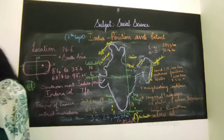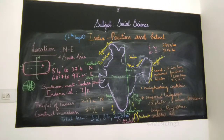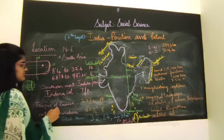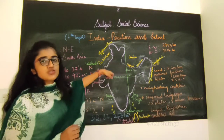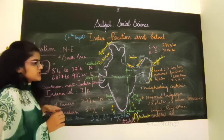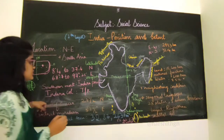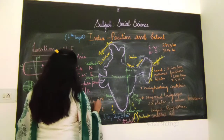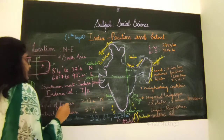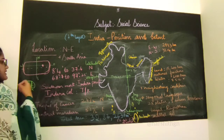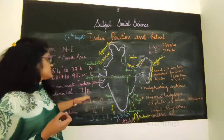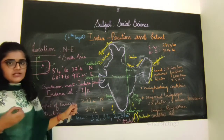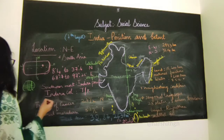We have one latitude called the Tropic of Cancer. The Tropic of Cancer passes through India and divides India into almost equal parts. The Tropic of Cancer is a latitude at 23 and a half degrees north, and it passes through India dividing it into two equal halves.